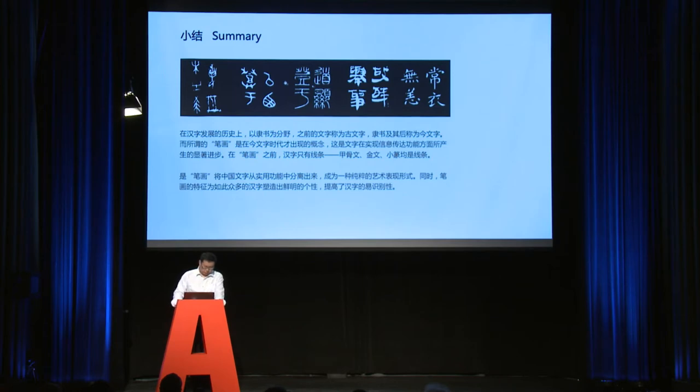In the history of development of Chinese script, Li Shu stands as the threshold between the ancient script and the modern script. The stroke is a concept that emerged only during the modern script era. It is the stroke that freed Chinese characters from their purely pictographic nature and turned them into a unique artistic expression called calligraphy.